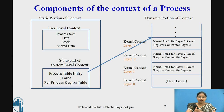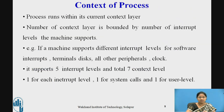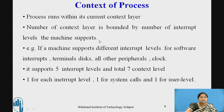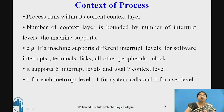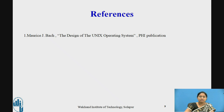As many interrupt levels as are supported by the system, that many context layers will be associated with the process. To summarize: the number of context layers is bounded by the number of interrupt levels the machine supports, and each time the process runs within its current context layer. There are different context layers present in the context of the process. This is all about the context of the process.